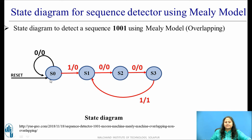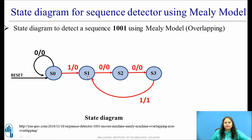Now let us consider state S0 again. In state S0, if the initial bit received is 1, it will move to the next state. But if the initial bit received is 0, it means no sequence has started, so it will remain in the same state and the output is made 0. In S0, if the incoming bit is 0, it remains in S0. Now if the next bit received is 1, it will move to state S1. So the first bit of the sequence is received, and if 0 is received next, it will move to the next state.